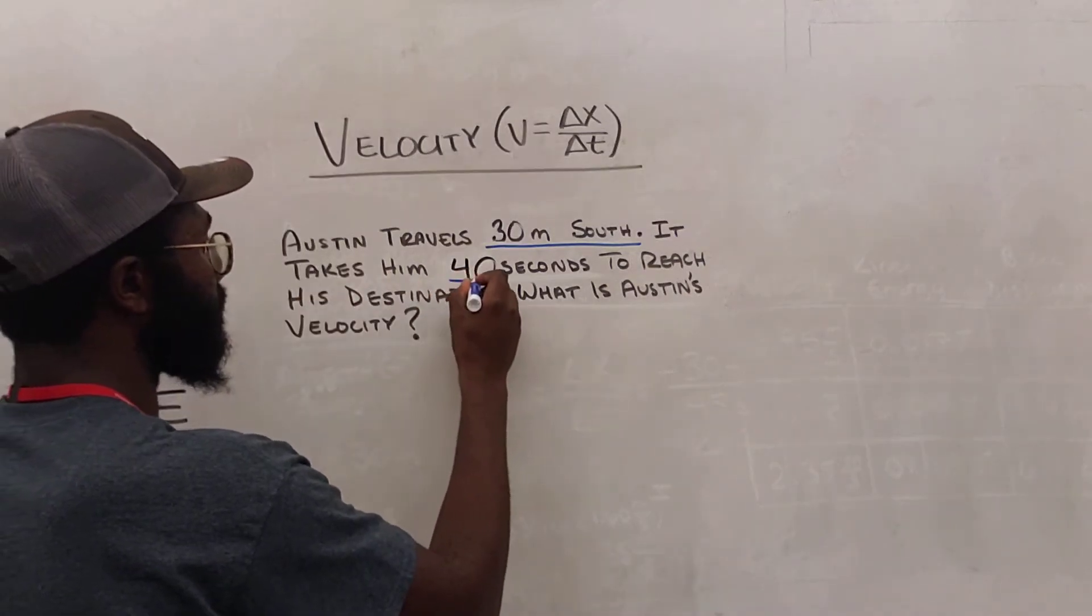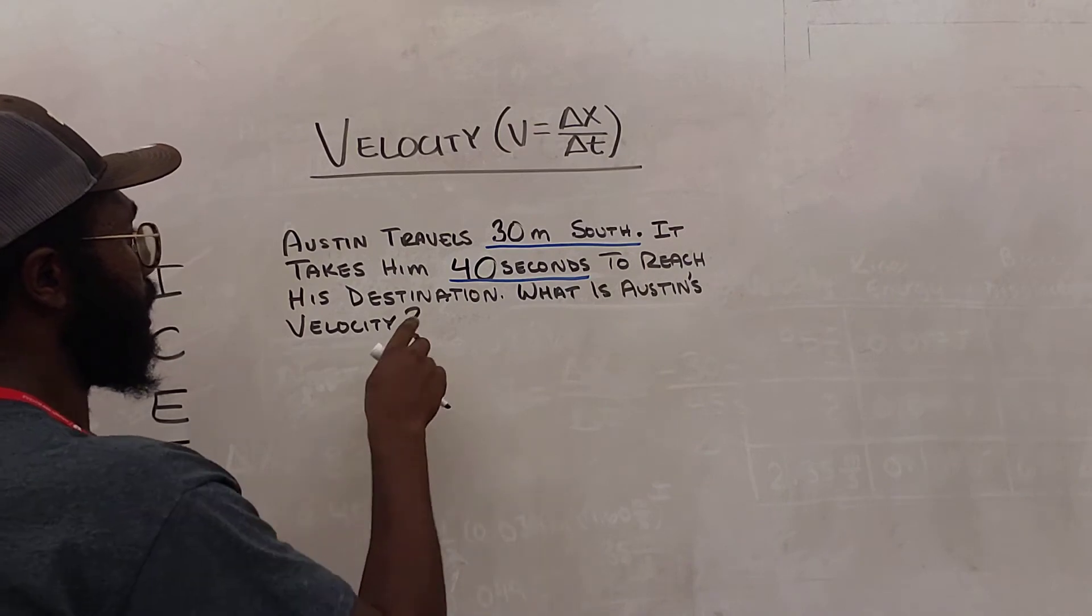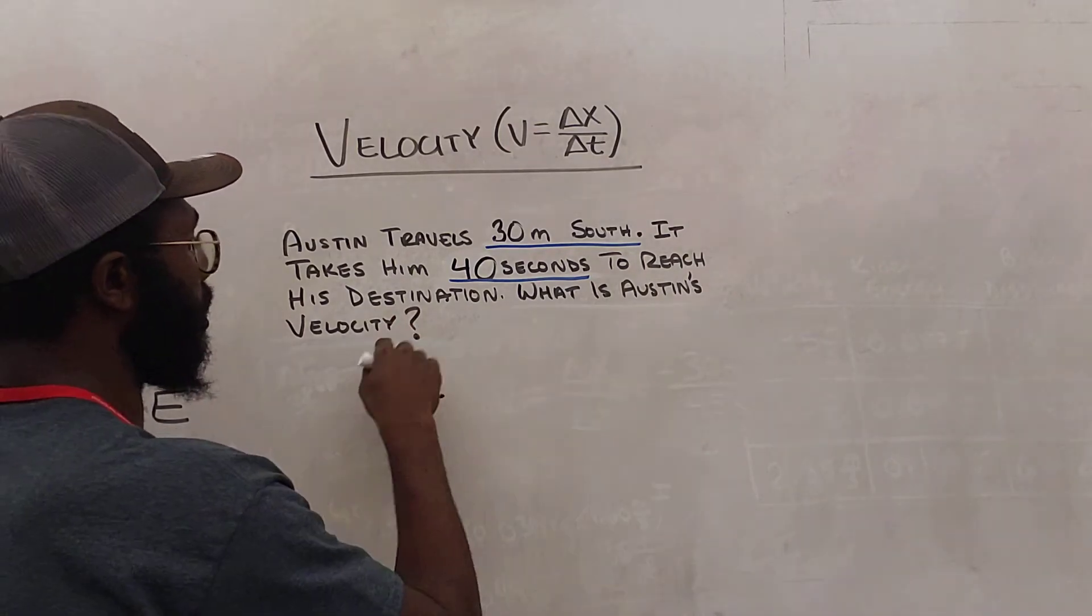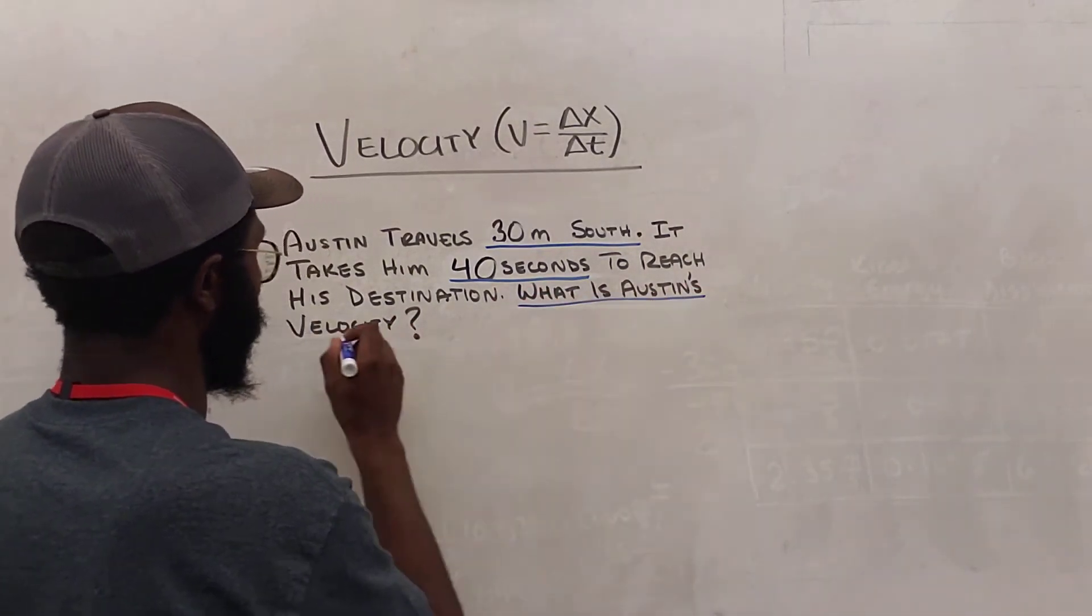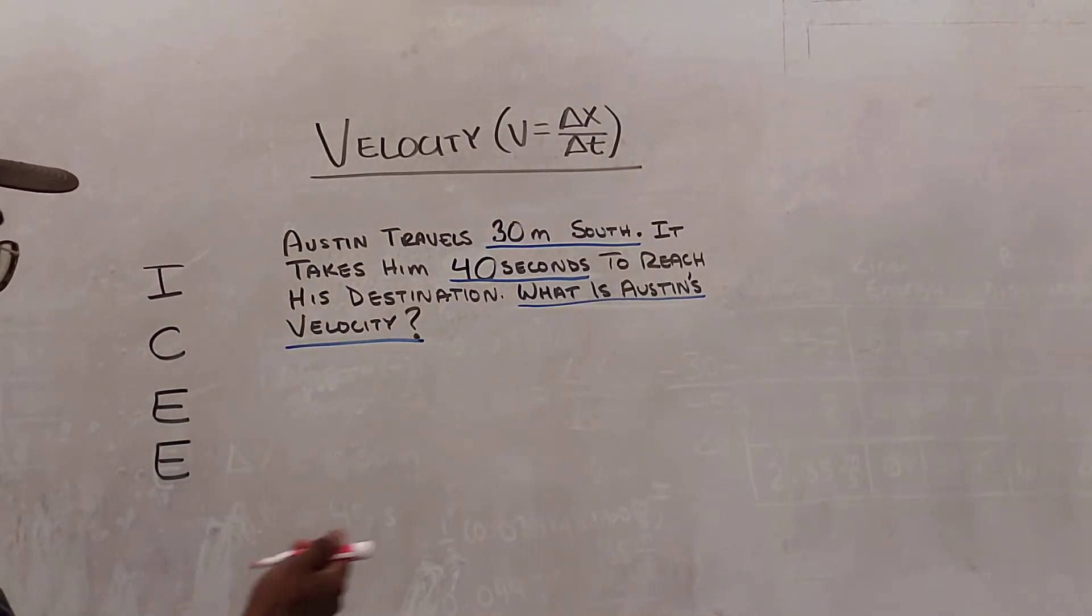It takes him 40 seconds. That is another measurement we want to identify. And what is Austin's velocity? That's our question. Awesome. So we've completed our identify step.